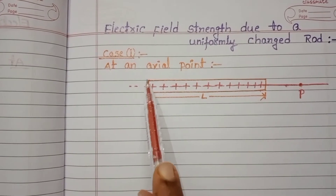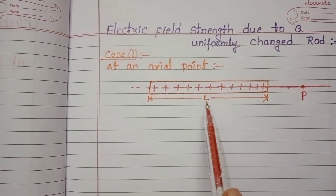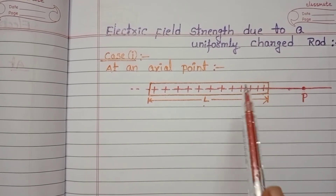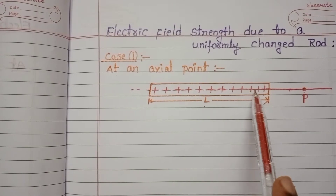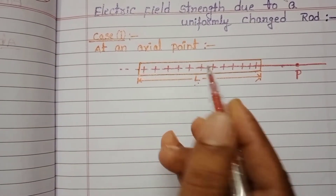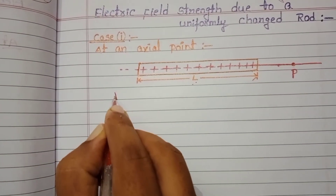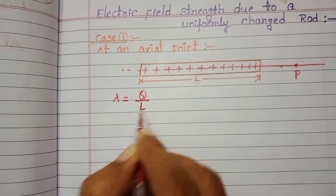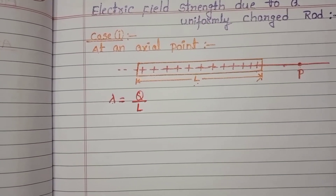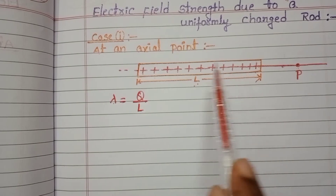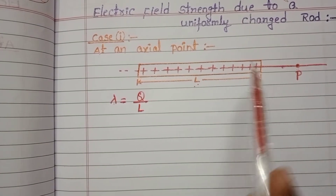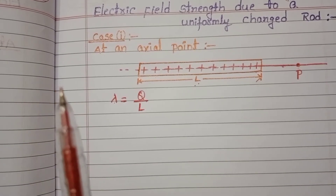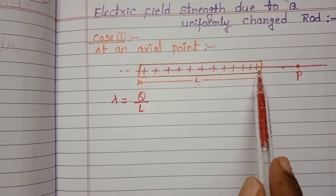Consider a rod of length L, with Q amount of charge distributed uniformly over it. Charge per unit length is lambda, where lambda equals Q by L. This charge distribution is a continuous charge distribution, so Coulomb's law is not directly applicable.